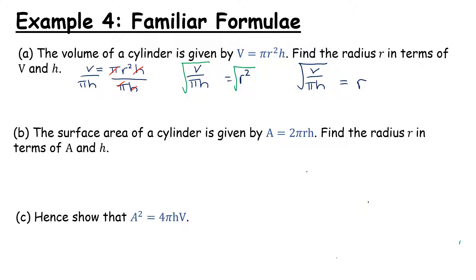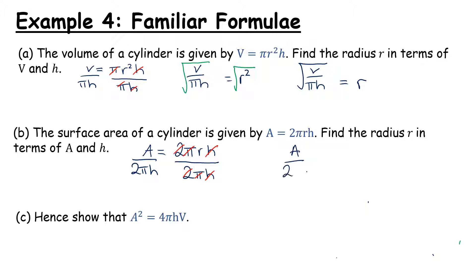Remember that every operation in maths comes with a partner — adding and subtracting are opposites, multiplying and dividing are opposites, and we have squaring and square roots. Now for the surface area: a = 2πrh. We want to find the radius in terms of a and h. We divide both sides by 2πh — the 2s cancel, the π's cancel, and the h's cancel — leaving a over 2πh equals r.